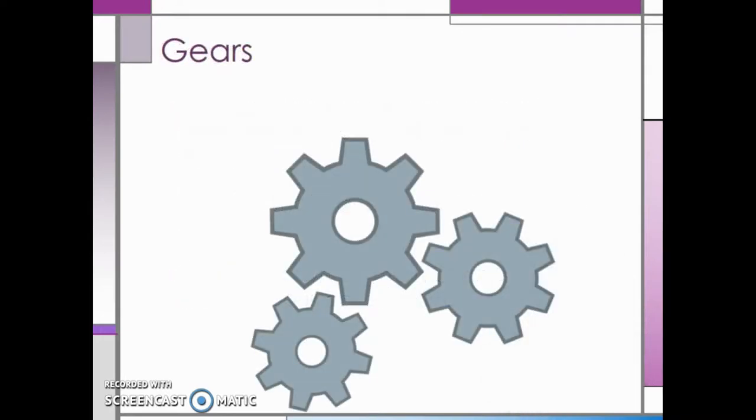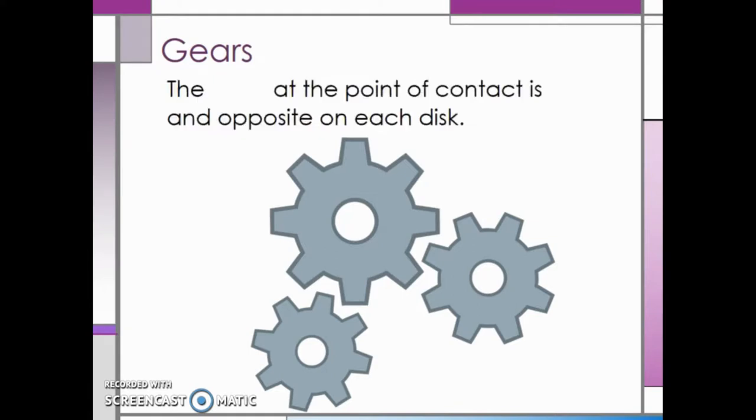On a gear, the force at the point of contact is equal and opposite on each disc. As we see with these arrows, the force on one disc is equal and opposite the force on the other disc at the point where the teeth mesh.